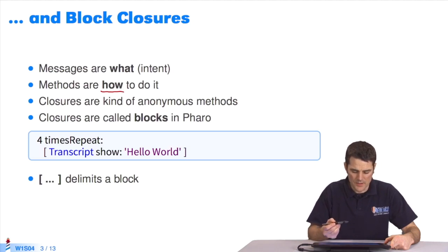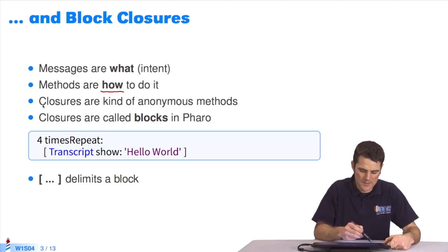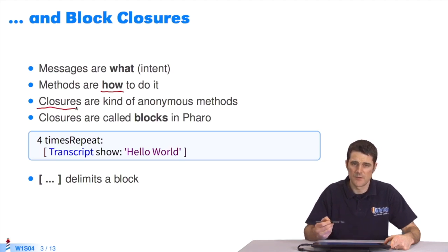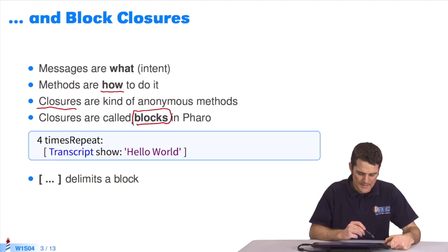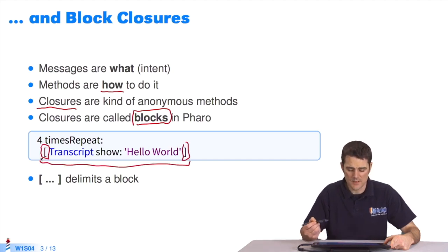Next, we have another concept, which is that of closure. There are lexical closures, blocks, sorts of anonymous methods in Pharo. We call them blocks. This is important vocabulary. Blocks are delimited by square brackets, as you see here. So all this is a block. You should really look at this as an anonymous method.